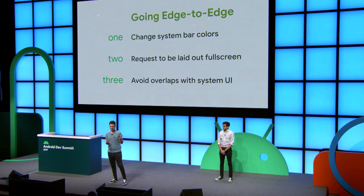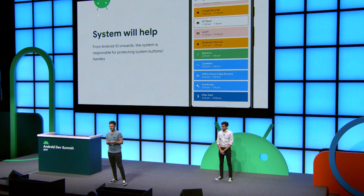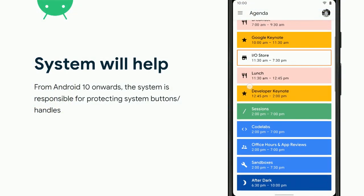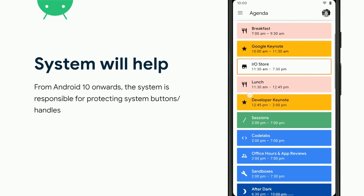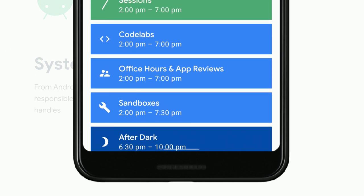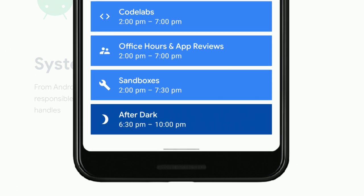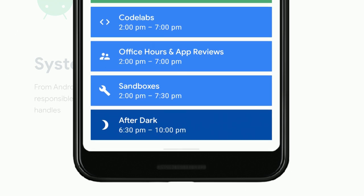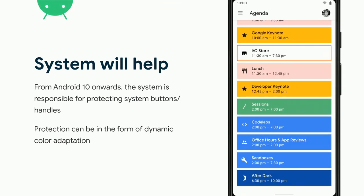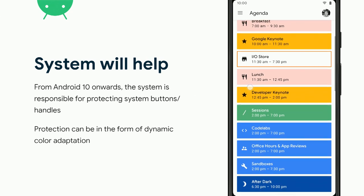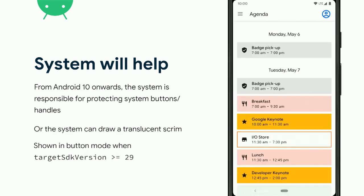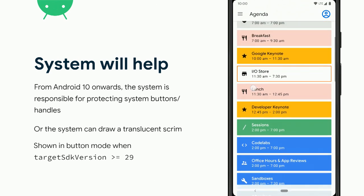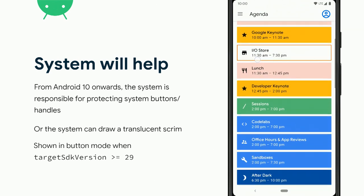The first step is changing the system bar colors. The system in Android 10 will help you going forward. As the user scrolls, the navigation bar behind it is actually changing color based on the content behind it, allowing the user to see that bar behind dark content. That is what we call dynamic color adaptation — it's one form of protection for content that the system provides for you. The second type is a translucent scrim, which you can see at the bottom. As the user scrolls, there's a translucent background behind the navigation bar to protect the content.